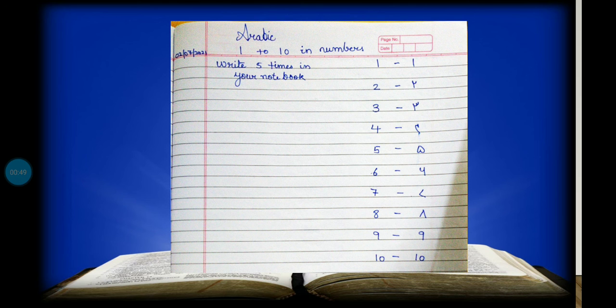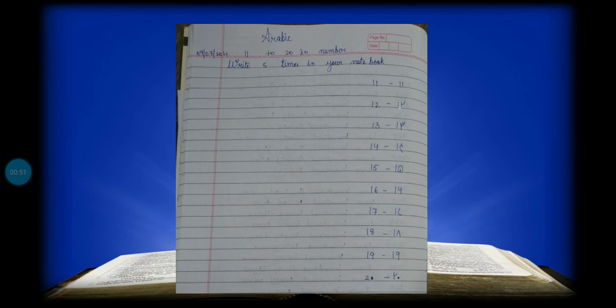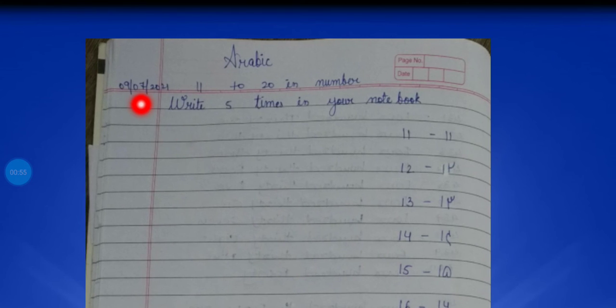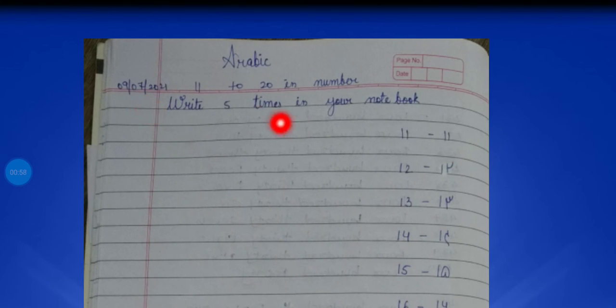We will continue with the next number, that is 11 to 20. So first of all, you have to write today's date, that is 9 of July. And you have to write all the numbers five times in your notebooks.